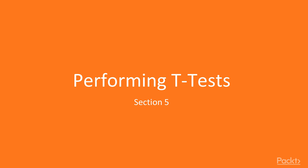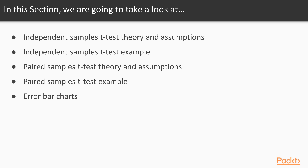Welcome to section 5. In this section, we're going to talk about different types of t-tests. Specifically, we're going to begin by discussing the independent samples t-test — its theory and assumptions — then go through an example. After that, we'll cover the paired samples t-test, also with theory, assumptions, and an example. Finally, we'll talk about how to visually represent these results by creating error bar charts.